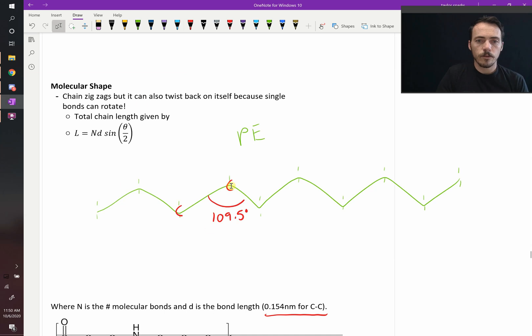...which has 1, 2, 3, 4, 5, 6, 7, 8, 9, 10, so this would be decane, the hydrocarbon decane. We could figure out the length of it if it was all the way stretched out.